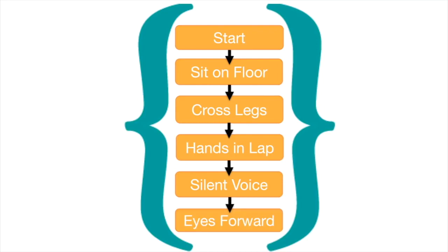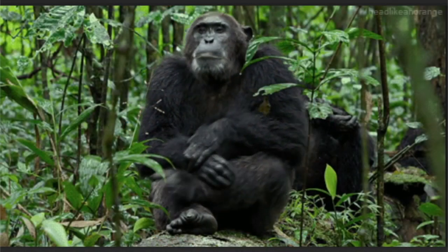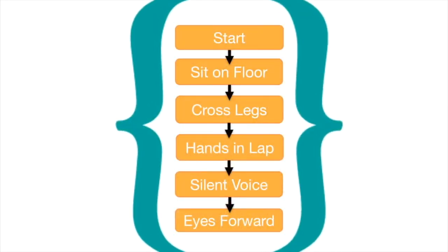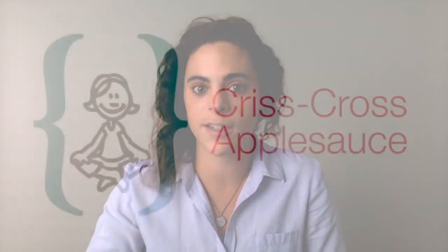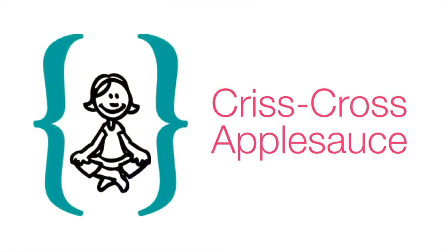Students learn crisscross applesauce once and likely will use it throughout the year. Once students learn it, we don't have to instruct them step-by-step every time we say it — students know what to do when they hear it. This is the power and beauty of a function. Functions allow us to repeat a sequence of code without actually having to write the code over again, simplifying a complex action into only one command, just like our crisscross applesauce example.